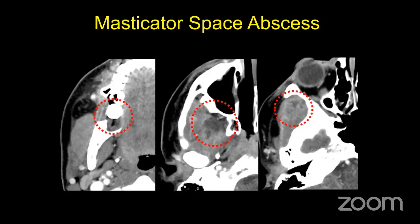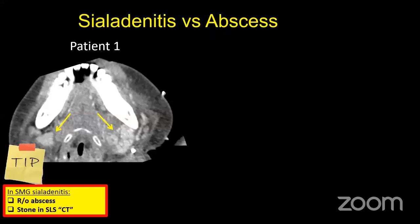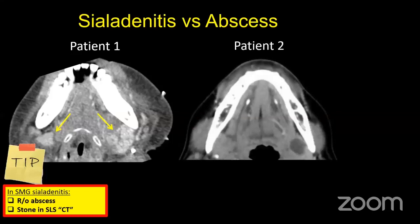Whenever you see an abscess in the masticator space, immediately go to the dentition and check if it is normal, because almost always a masticator space abscess is of odontogenic origin. There is also an MRI case showing extension to the suprazygomatic component of the masticator space abscess. My tip: in masticator space abscesses, always look for a dental cause. Regarding the salivary gland itself — whenever you see submandibular sialadenitis, make sure there is no abscess.